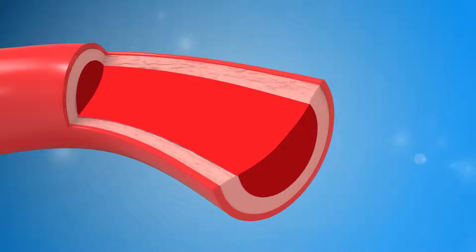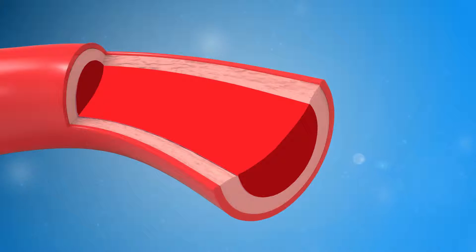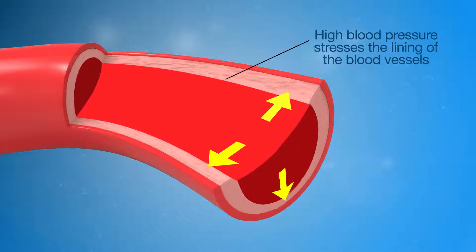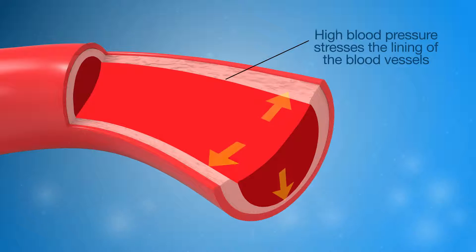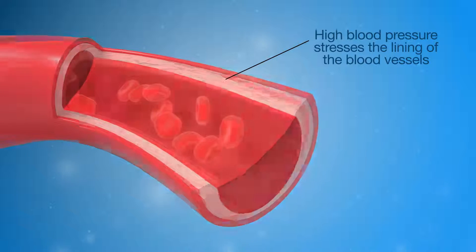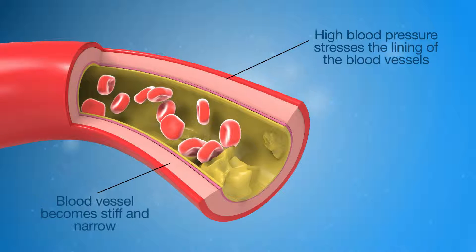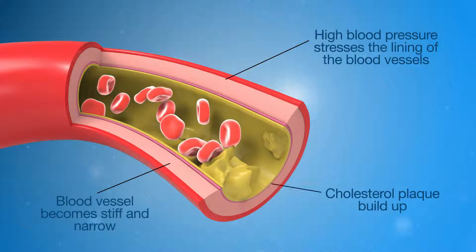High blood pressure, or hypertension, is another risk factor for blood vessel damage. High blood pressure means that the blood is pumping through our blood vessels with too much force. Over time this can make the blood vessels stiff, which can result in them narrowing, making them more vulnerable to the build-up of plaque and atherosclerosis.